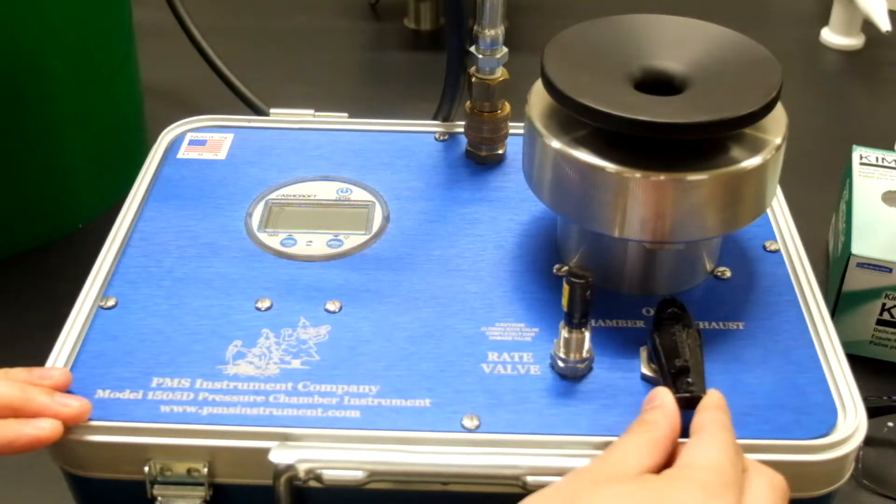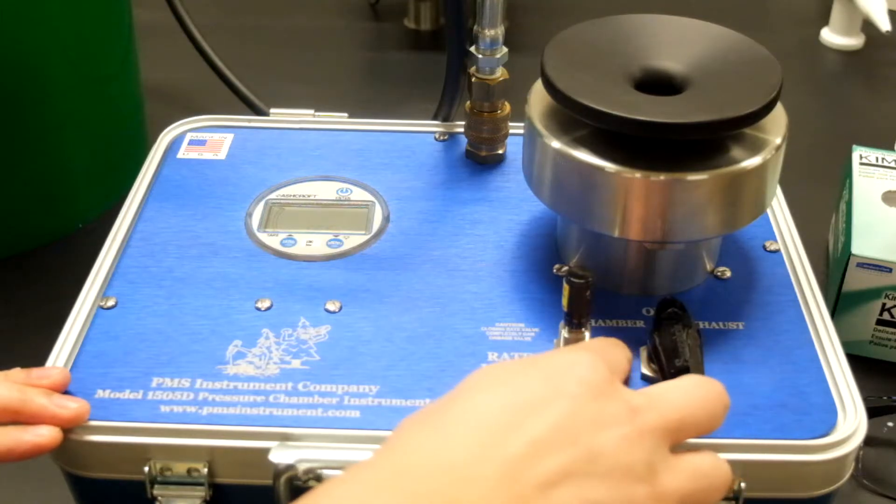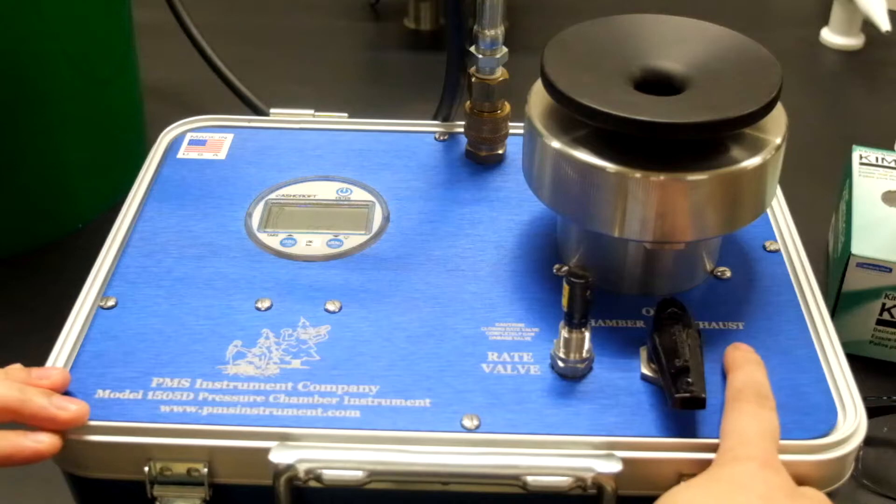On the right we have the valve that controls the direction of the nitrogen gas either going to the chamber or the off position or to the exhaust.